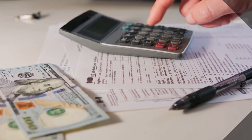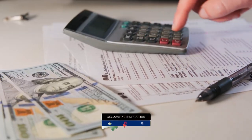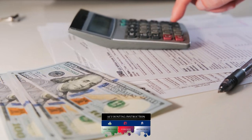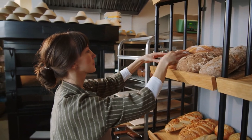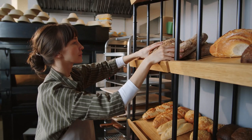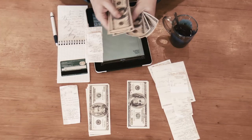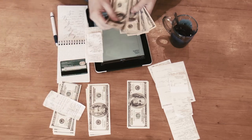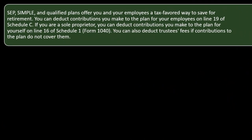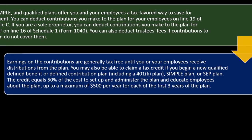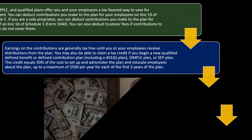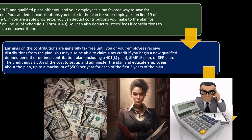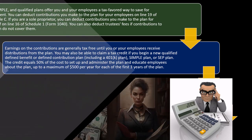That above-the-line deduction also helps calculate how much you can put in, because there are often limitations based on your income. Ideally, at the end of the year, a small business with significant cash flow can determine the maximum contribution to a retirement plan — if they have the cash flow to do it, since tax planning depends on cash flow. You can also deduct trustee fees if contributions to the plan do not cover them. Earnings on contributions are generally tax-free until you or your employee receive distributions from the plan.